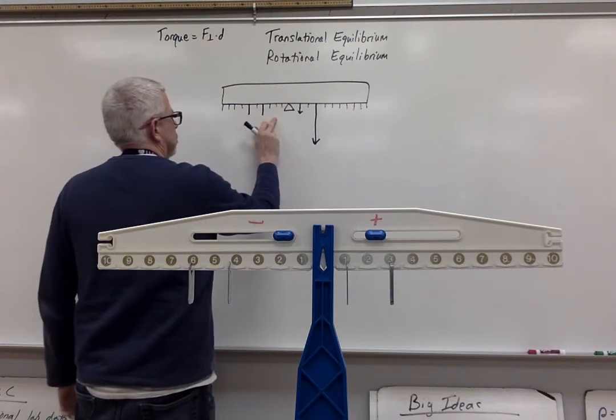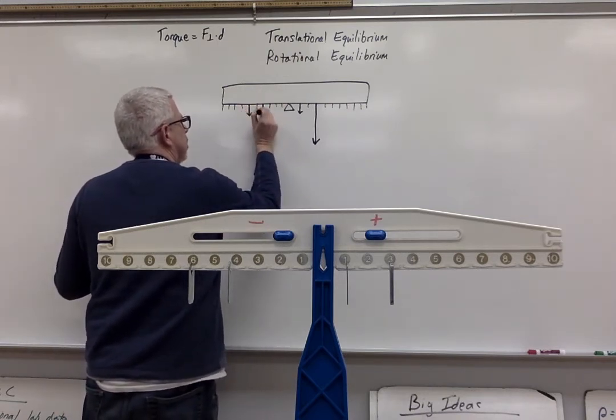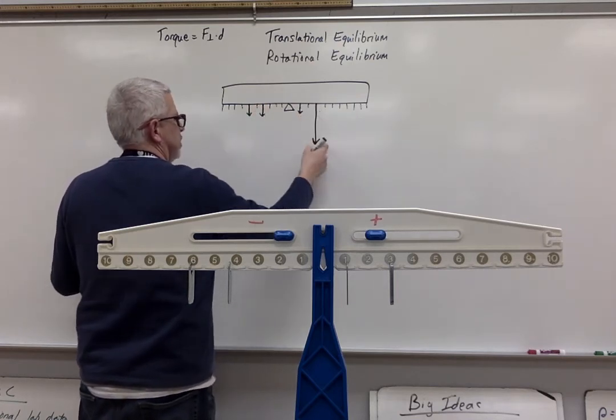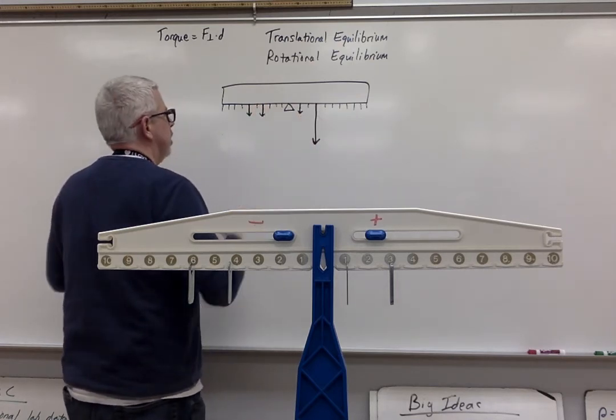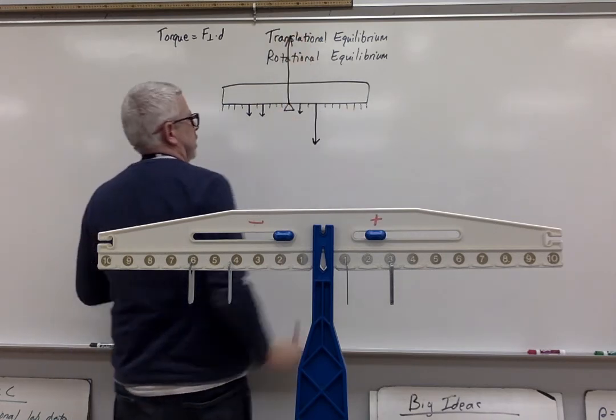So if I have, so this should be shorter, if I have one, two, three, four, five, six units of force down, I should have a normal force up of six units of force.